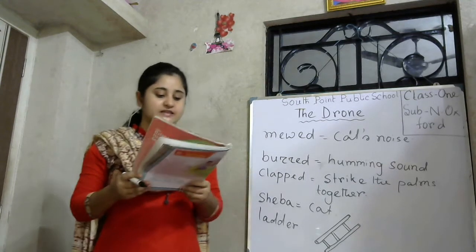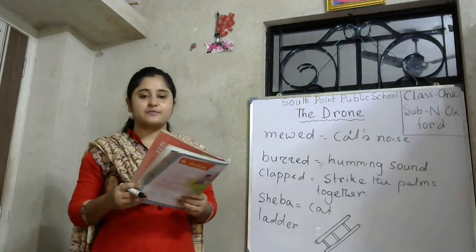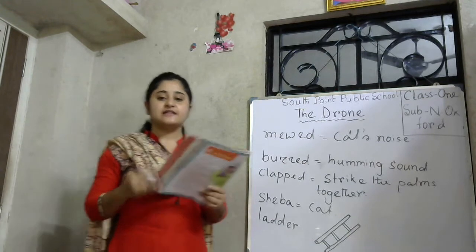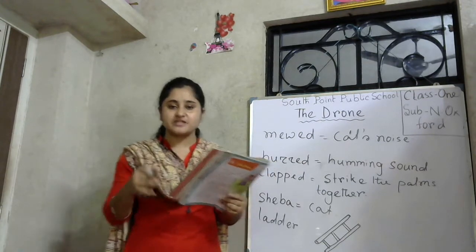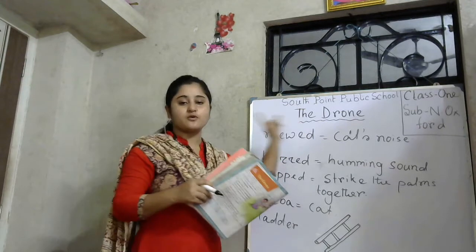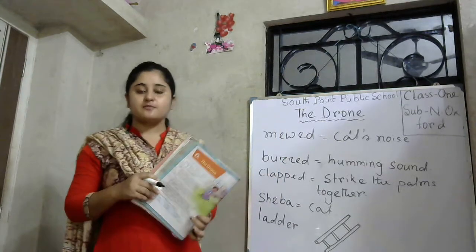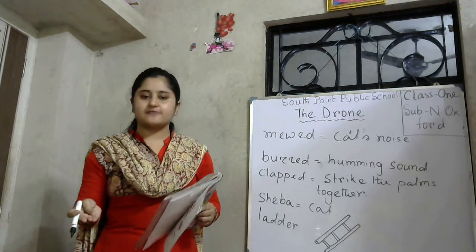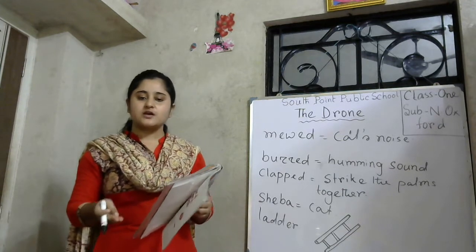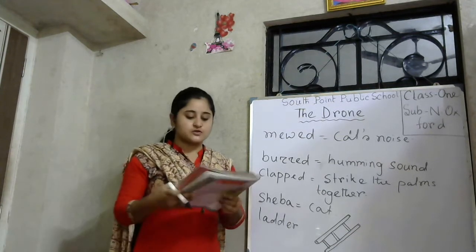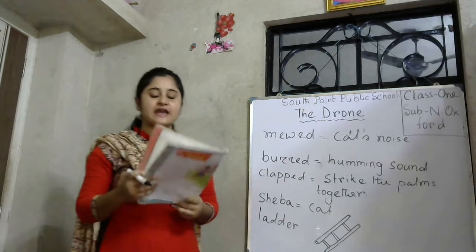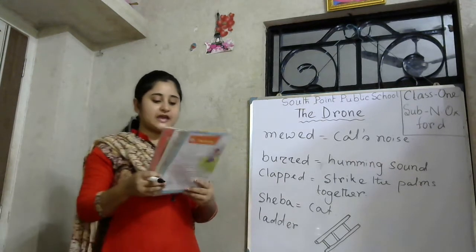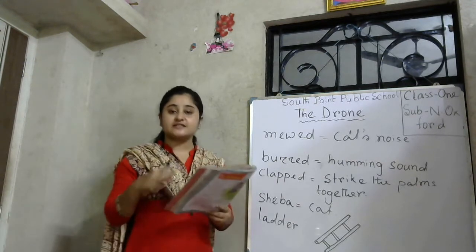At last Bikram said, 'That is a great machine.' Which machine? This drone. The drone is a great machine because it can fly, take photos, take videos, and it is a technical machine. That is why Bikram thought it is a great machine.